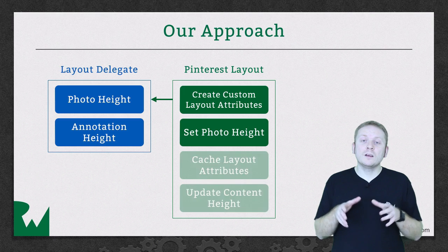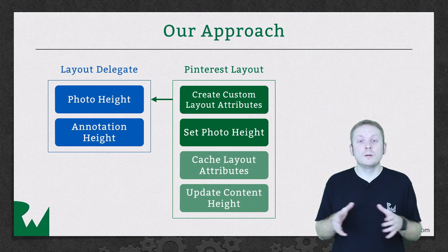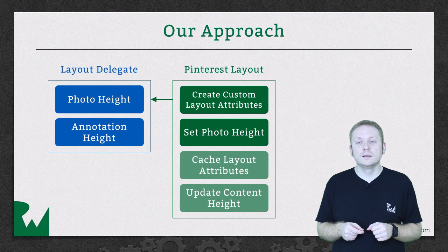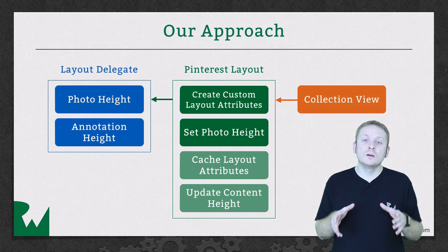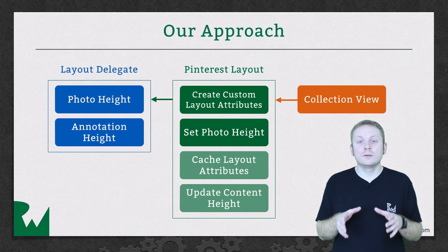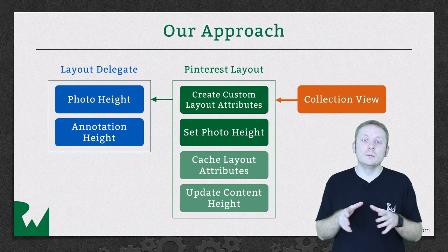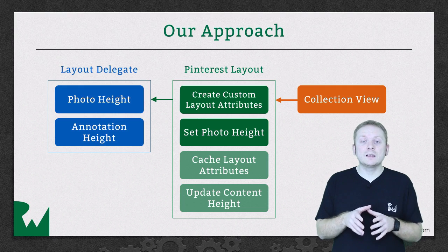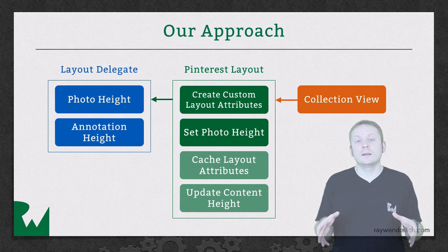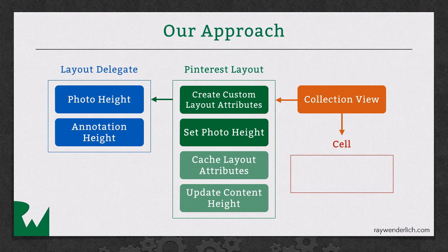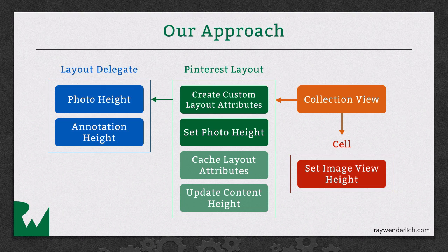The rest of our layout implementation will remain unchanged. When the collection view requests the layout attributes via layoutAttributesForElementsInRect, it will eventually pass these on to our cells, where we can override applyLayoutAttributes, extract the photo height value, and then use that to size the height of the image view, which will ultimately display the photo.